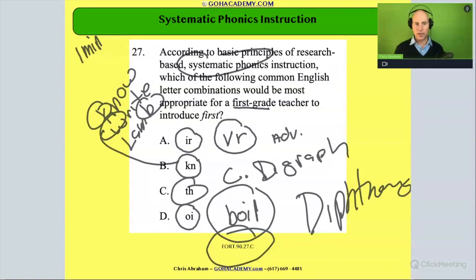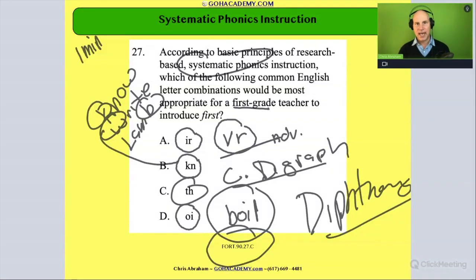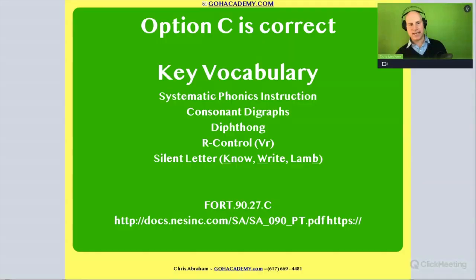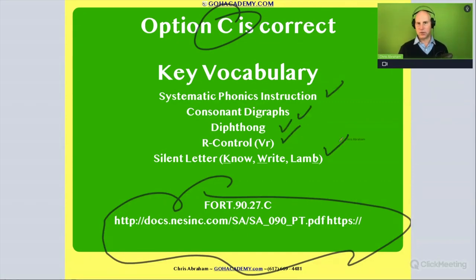Now team, I know it may seem like a basic question, but look at all the phonics you got to review — consonant digraphs, diphthongs, controlled-R, and silent letters. This is great because you can use that in your essays. You can point out that a student had difficulty with controlled-R words and give an example, or say the student had difficulty with consonant digraphs or consonant blends. This will make your first essay better. The answer is C — good stuff! All right, let's keep going — you're doing great!